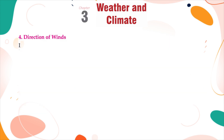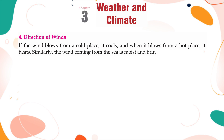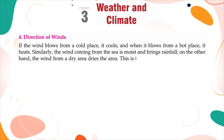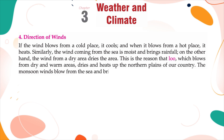Direction of winds. If the wind blows from a cold place, it cools, and when it blows from a hot place, it heats. Similarly, the wind coming from the sea is moist and brings rainfall. On the other hand, the wind from a dry area dries the area. This is the reason that loo, which blows from dry and warm areas, dries and heats up the northern plains of our country. The monsoon winds blow from the sea and bring rainfall.